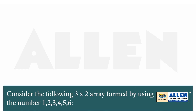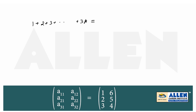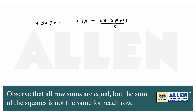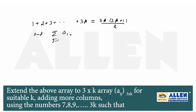If we add all the numbers 1 plus 2 plus 3 up to 3k, this sum is 3k(3k+1)/2, and sigma of A1j for j from 1 to k equals k(3k+1)/2.